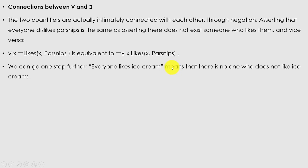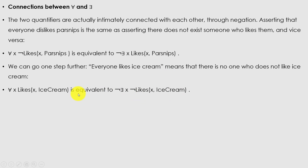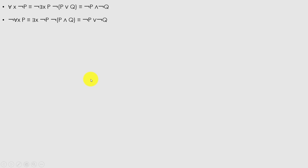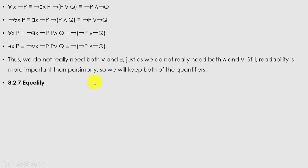Everyone likes ice cream means there is no one who does not like ice cream: ∀x Likes(x, IceCream) ≡ ¬∃x ¬Likes(x, IceCream). The universal quantifier is really a conjunction over the domain objects, and the existential quantifier is a disjunction. It should not be surprising that they obey De Morgan's rules. The De Morgan rules for quantifiers and unquantified sentences are as follows: ¬∀x P ≡ ∃x ¬P and ¬∃x P ≡ ∀x ¬P.